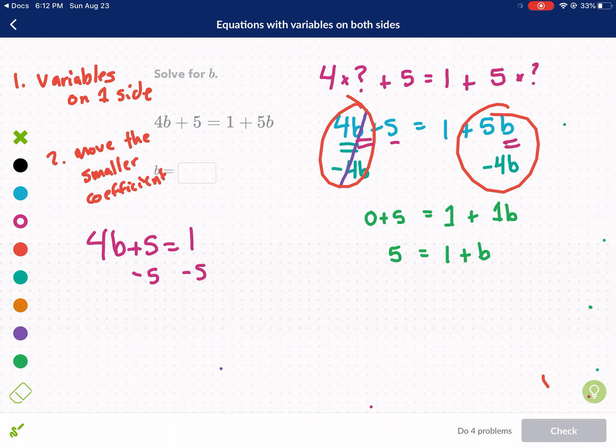We had 4b and 5b. Now they have two different coefficients. One is 4 and one is 5. So we move the smaller one because generally that makes it easier to do the math later on. So that's why I always give that tip to my students.